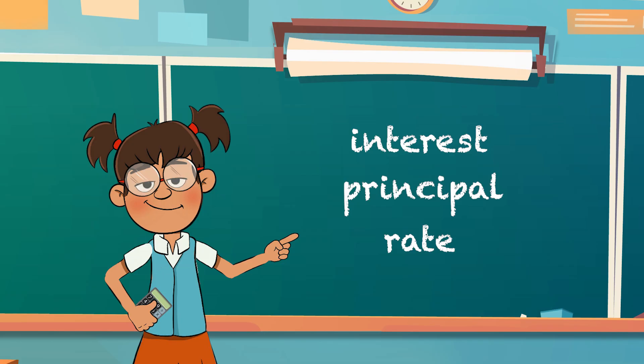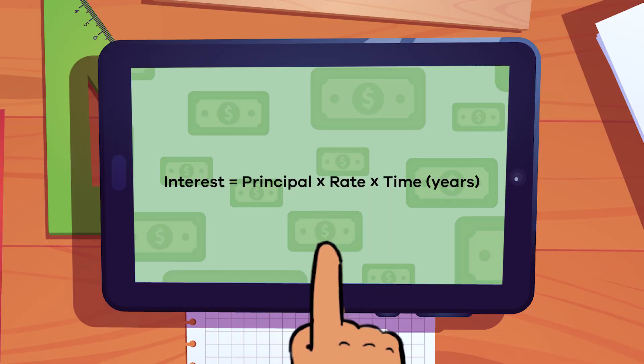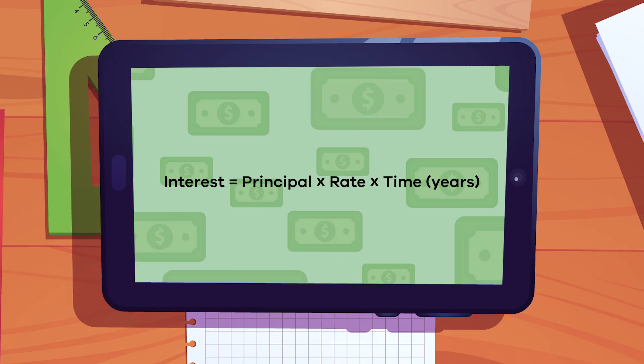It all comes down to math. Remember this mathematical equation for simple interest, because we are going to use it in just a minute. Interest equals principal multiplied by rate multiplied by time in years.